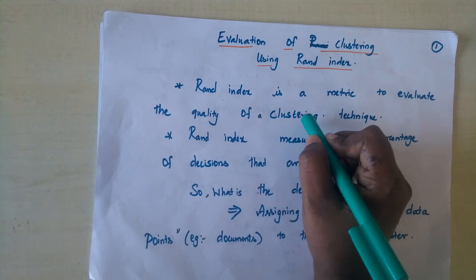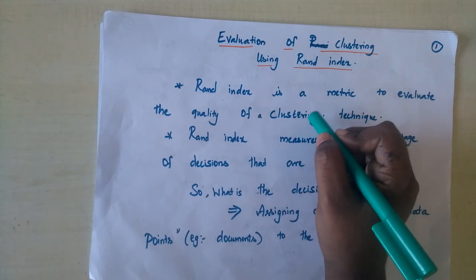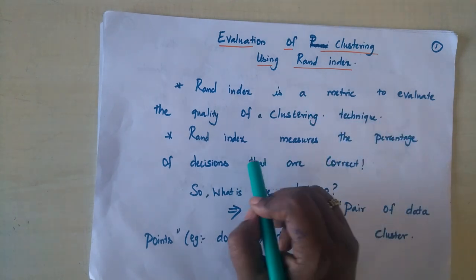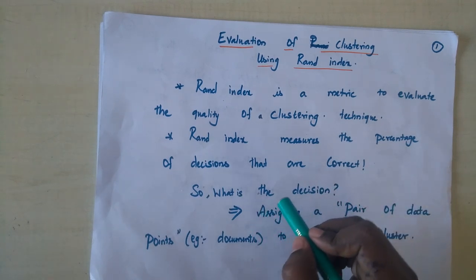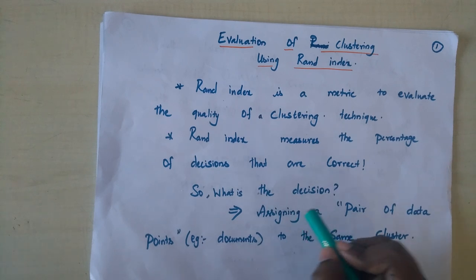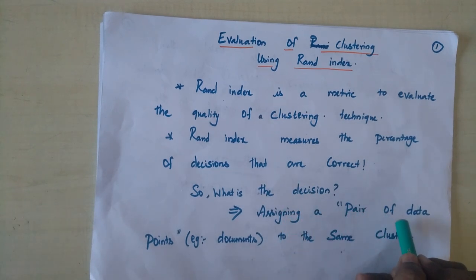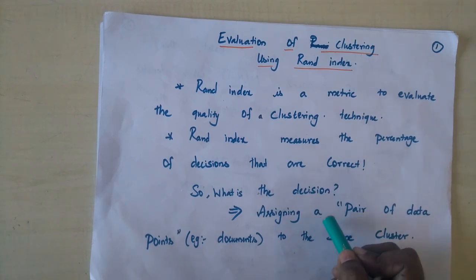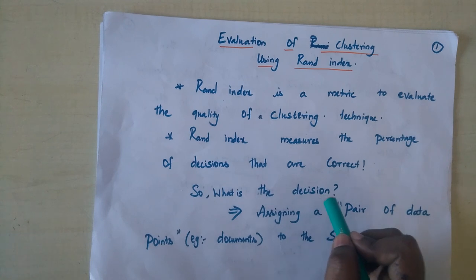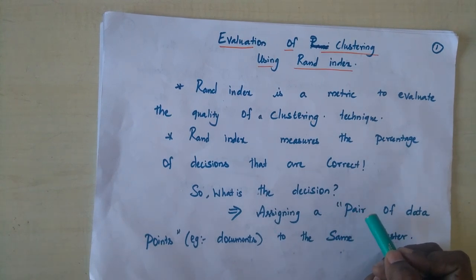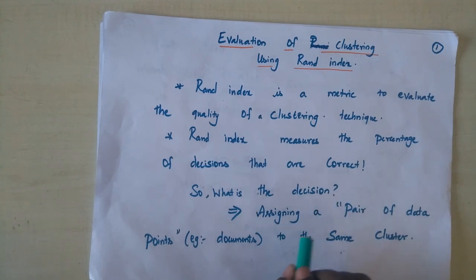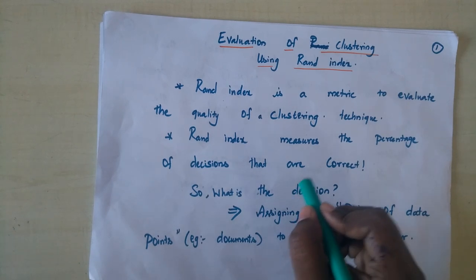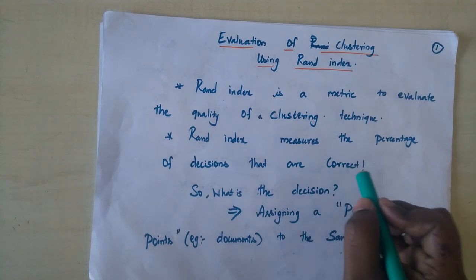RAND index tells us how many data points within a cluster are actually similar to each other. In other words, RAND index measures the percentage of decisions that are correct. Here we need to understand what a decision actually means. RAND index views the process of clustering as a series of pairwise comparisons of data points. When we build a cluster, we take two data points, measure their similarity using a similarity metric such as Manhattan distance, and if they are similar, we put them into a cluster. RAND index measures how many such decisions we have made correctly.